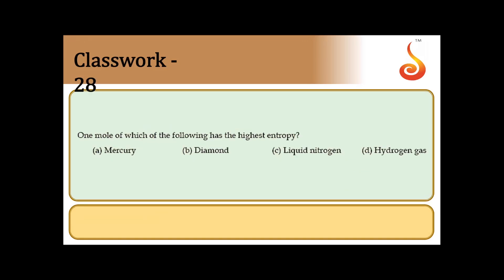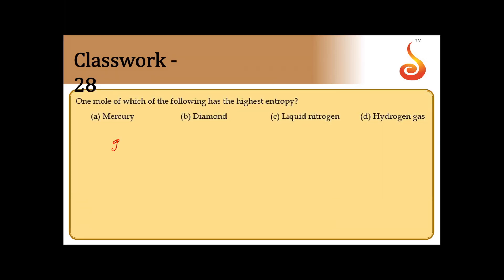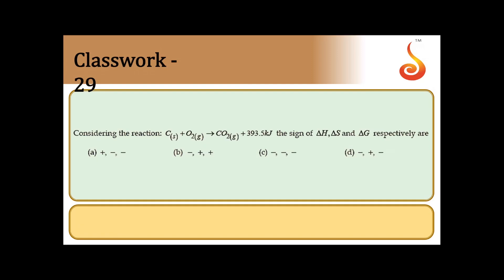Question 28: Which of the following has the highest entropy per mole? Gas has more entropy than liquid, which has more than solid. Among the options, gaseous hydrogen (H2 gas) has the highest entropy. Answer is option D.